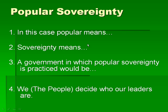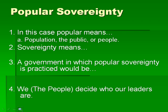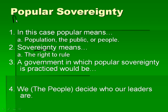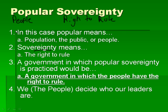The first one we're talking about is popular sovereignty. You have to understand what both of those words mean. 'Popular' means population, the public, or people. And 'sovereignty' — if you look, you have the word 'reign,' as in to rule — so sovereignty means the right to rule. When you put these together, you have people and the right to rule. When the government practices popular sovereignty, it is a government in which the people have the right to rule.